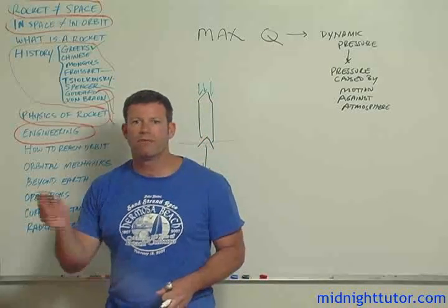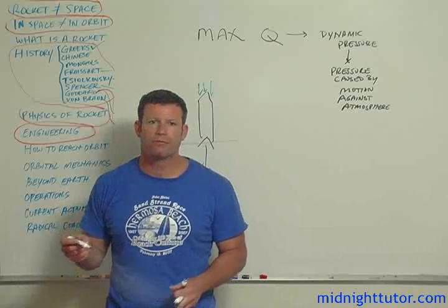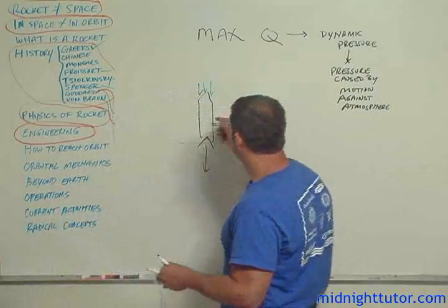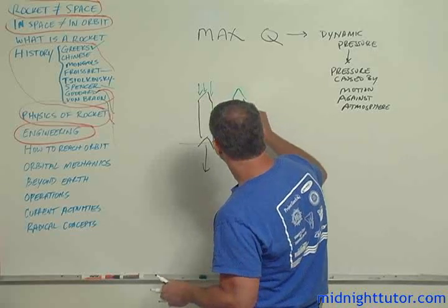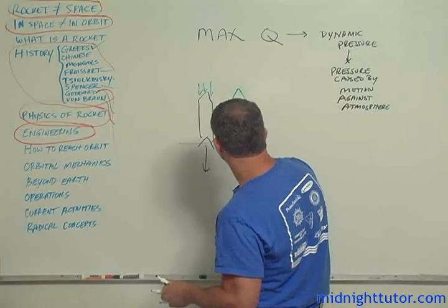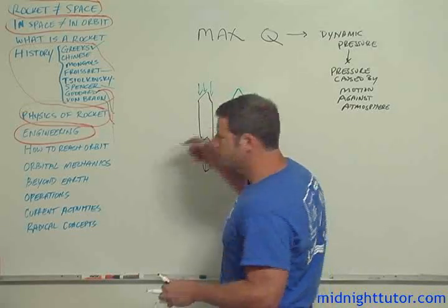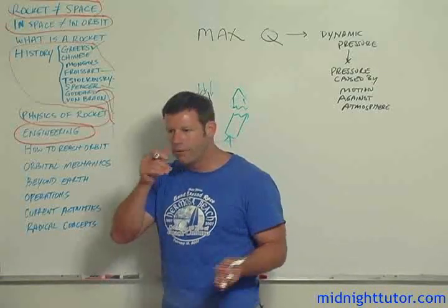If you don't get the vehicle through that maximum dynamic pressure, what happens? It'll self-destruct, right? It'll buckle, it'll look like this. It'll be in pieces because the pressure will deform it and then it'll fall apart.